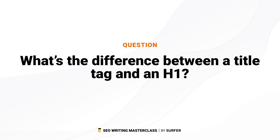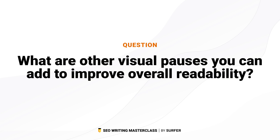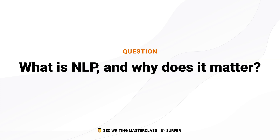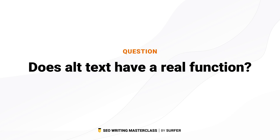For example, what's the difference between a title tag and an H1? How do you know how many images to include in your post? What are the other visual pauses you can add to improve your overall readability? What is NLP and why does it even matter? Which factors does Google consider most important when deciding what is high-quality content? And, does alt text have a real function?